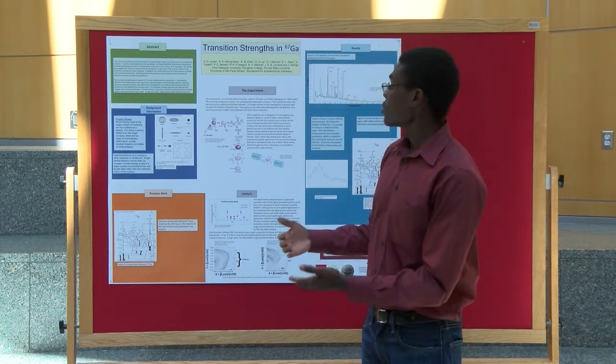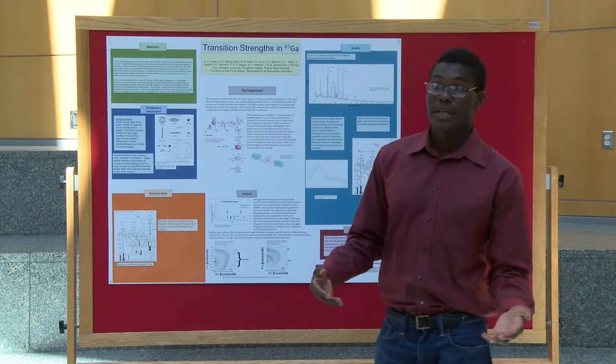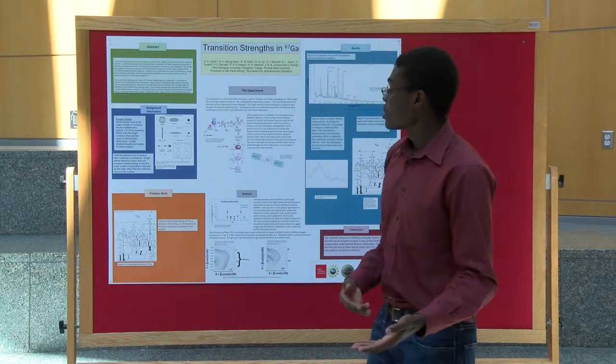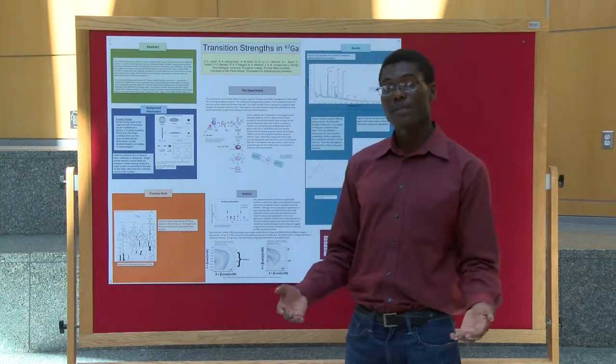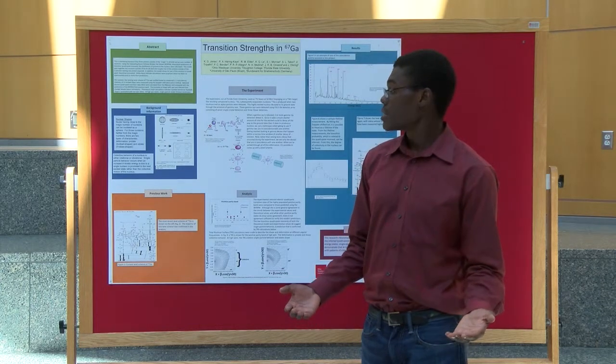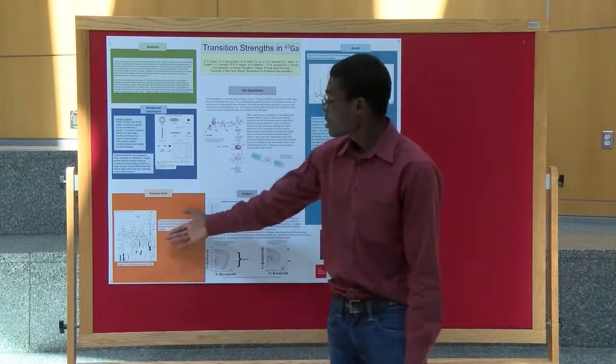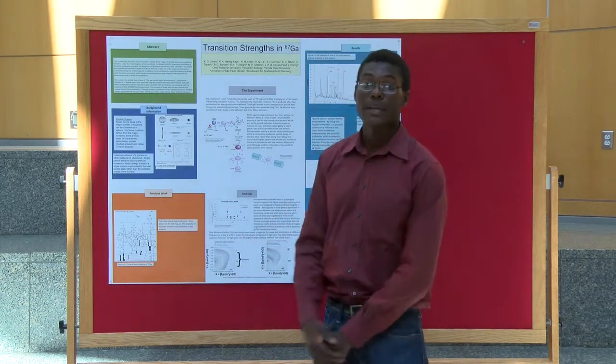In order to see whether we have this F7 halves band in gallium 67, we need to look at a level scheme. A level scheme is a fingerprint of the nucleus. It tells us a lot about the excited states of the nucleus. You can see here we have the current level scheme of gallium 67.